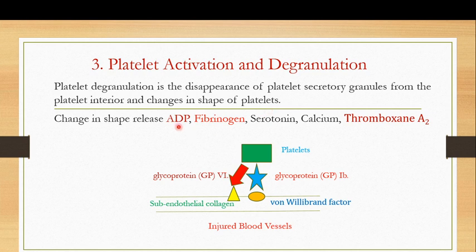During platelet activation and shape change, the granule contents that are released include ADP, fibrinogen, serotonin, calcium, and thromboxane A2. These are just some of the components found in platelet granules. During platelet activation and degranulation, all of the granule components are released and then perform their important functions.